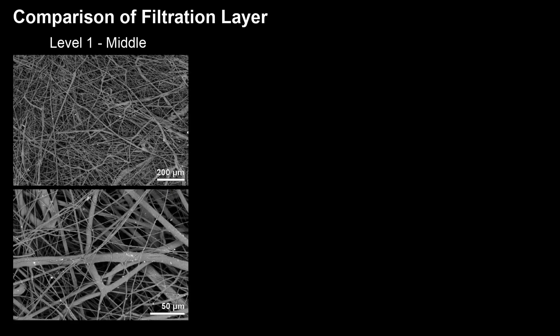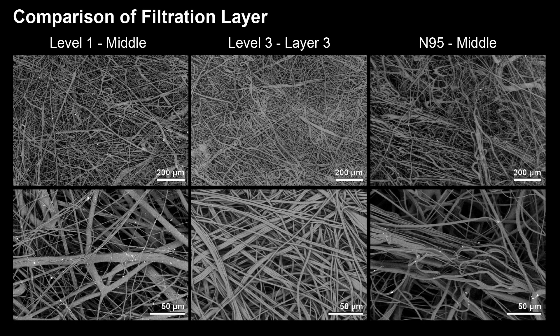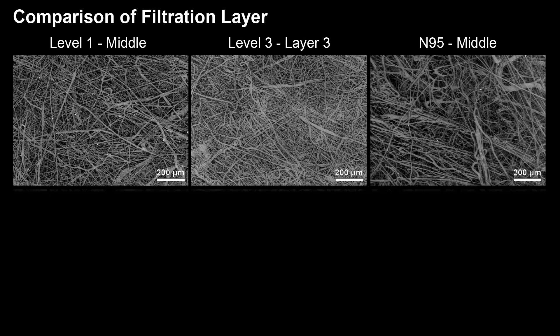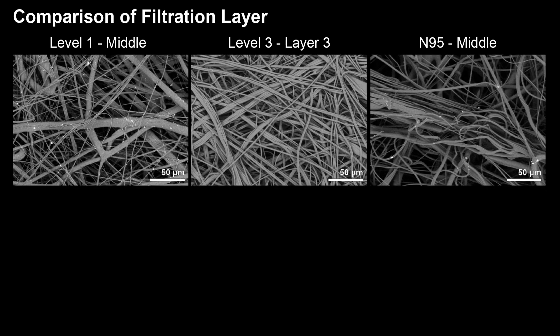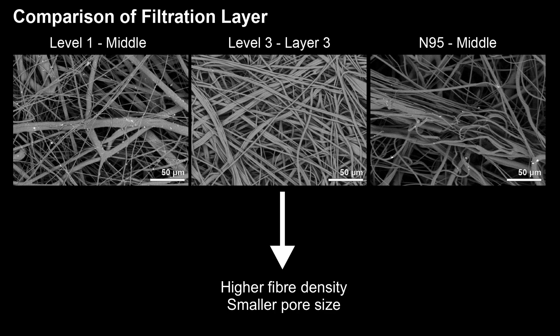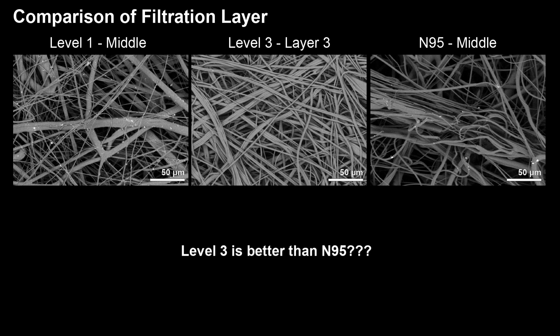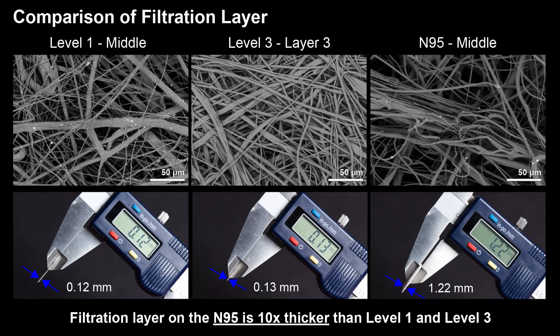After looking at these three masks and respirators in great detail, let's compare the filtration layers directly. Here we have a side-by-side comparison of the scanning electron microscopy images of the filtration layer. The top row contains low magnification images and the bottom row contains high magnification images. At high magnification, the filtration layer of the level 3 mask seems to have higher fiber density and smaller pore size than the level 1 and N95. However, the filtration layer of the N95 respirator is about 10 times thicker than the counterpart in level 1 and level 3. Although the fiber density may be lower on the N95, particles would have a harder time penetrating through the much thicker filtration layer.